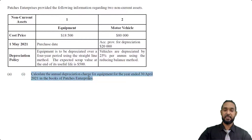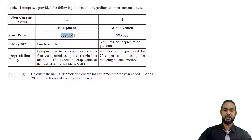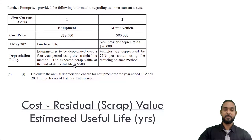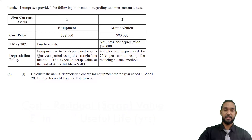So that's going to make this make a little more sense. We need to calculate the annual depreciation charge for equipment for the year ended 30th April 2021. The cost price is $18,500, the purchase date is 1st May 2020, and the depreciation policy says equipment is to be depreciated over a four-year period using the straight-line method, with an expected scrap value of $500 at the end of its useful life. So we know the formula is cost minus scrap value, divided by the estimated useful life — four years.